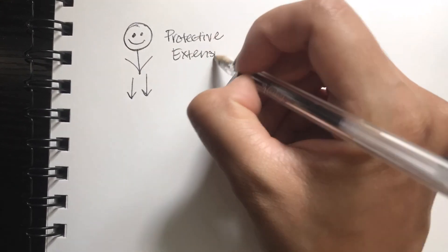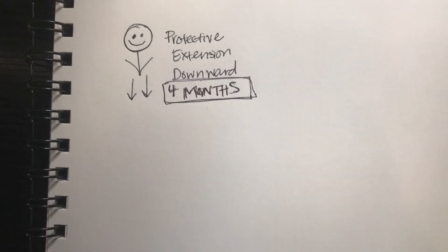So the first reflex I wanted to talk about is your protective extension downward reflex, and you'll typically see this in a kid around four months. To test the protective extension downward reflex, you hold the infant vertically and then rapidly lower it down towards a supporting surface, and the baby should respond by extending the lower extremities.